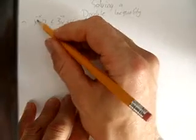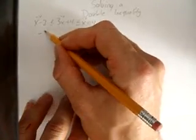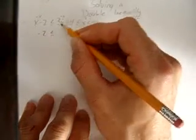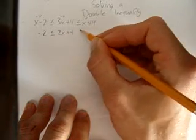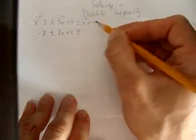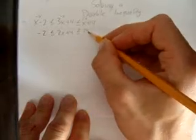And that actually turns out to be really good. x minus x just leaves 0, minus 2. 3x take away x is 2x plus 4. And x minus x leaves 0 again, and 14.